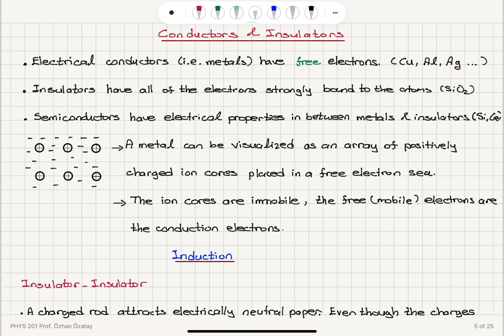When we talk about insulators, they have all of their electrons strongly bound to the atoms. For example, silicon dioxide has a covalent bond between silicon and oxygen atoms. These electrons are shared to form the closed shell structure of each atom, and since they are strongly bound, they cannot be easily detached from the atoms and released to the lattice. Therefore, it is very difficult to have conduction of electricity inside an insulator.